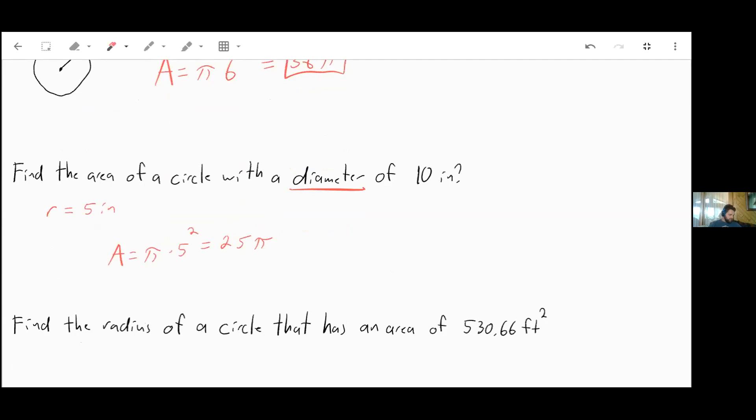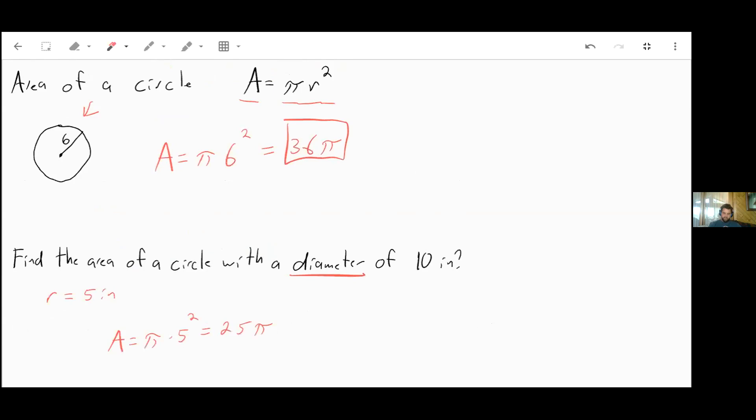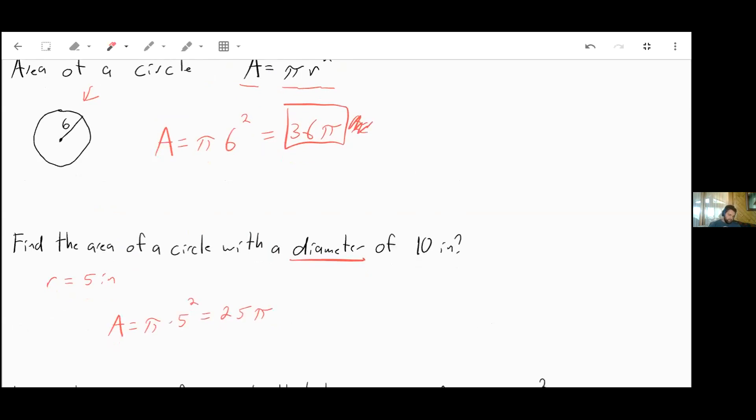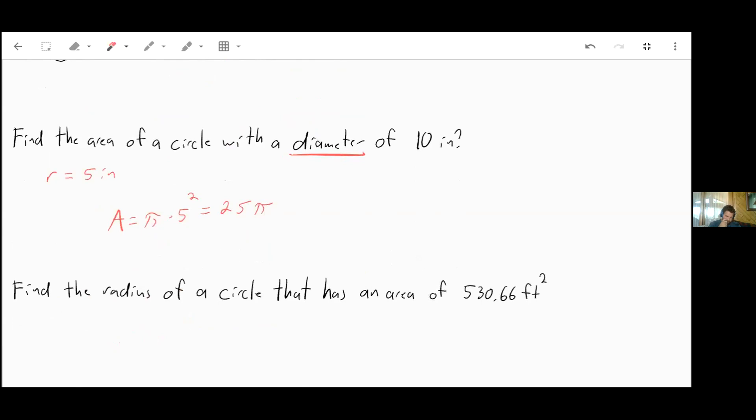And let me just double check what your book does here. Yeah, your book is generally substituting 3.14 in for pi. So up here for 36π, they just left it as 36π. But on this one, instead of 25π, they then multiply 25 by 3.14 for your pi. That's going to be approximately 78.5 inches squared.